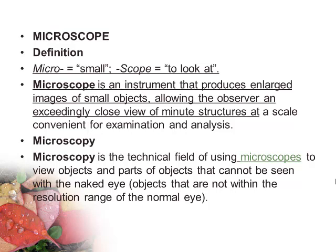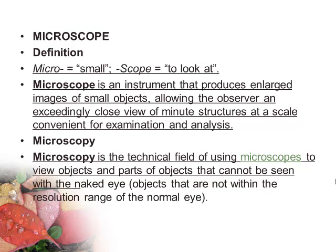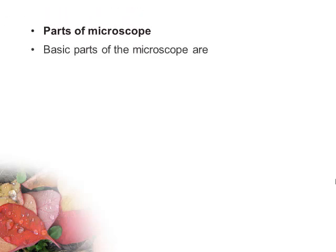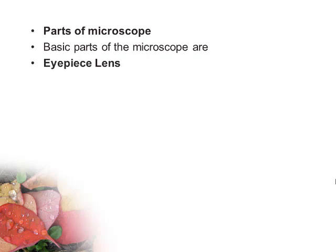Microscopy is the technical field of using microscopes to view objects and parts of objects that cannot be seen with the naked eye — objects that are not within the resolution range of the normal eye. The basic parts of the microscope include the eyepiece lens, the lens at the top that you look through.